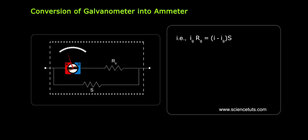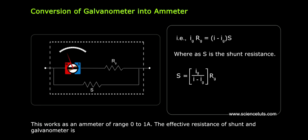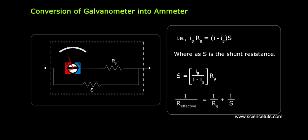That is, Ig Rg equals I minus Ig times S, where S is the shunt resistance. S equals Ig by I minus Ig into Rg. This works as an ammeter of range 0 to I ampere. The effective resistance of shunt and galvanometer is 1 by R effective equals 1 by Rg plus 1 by S.